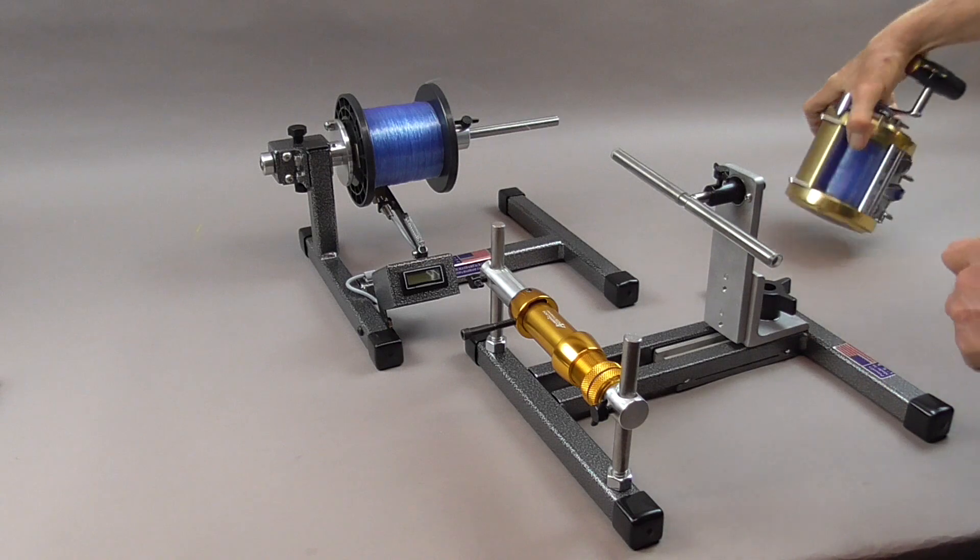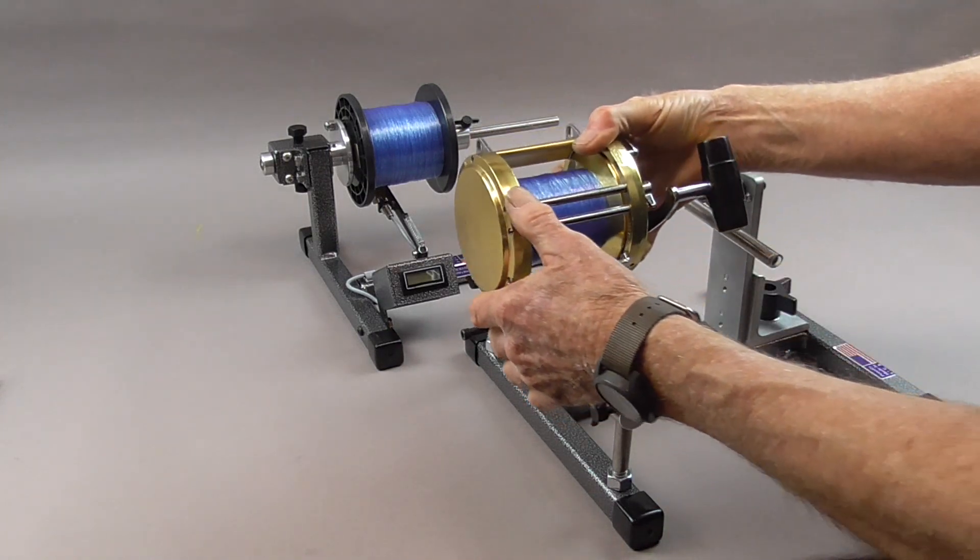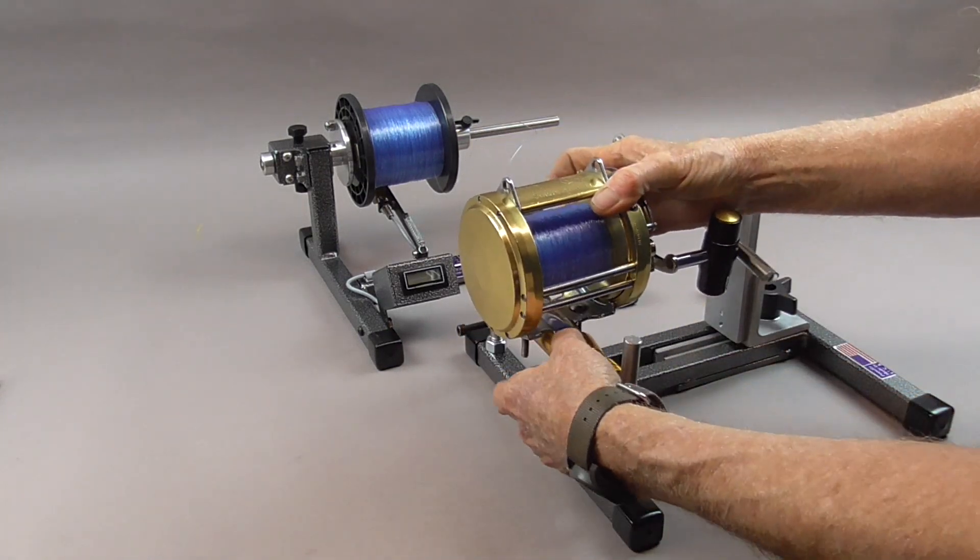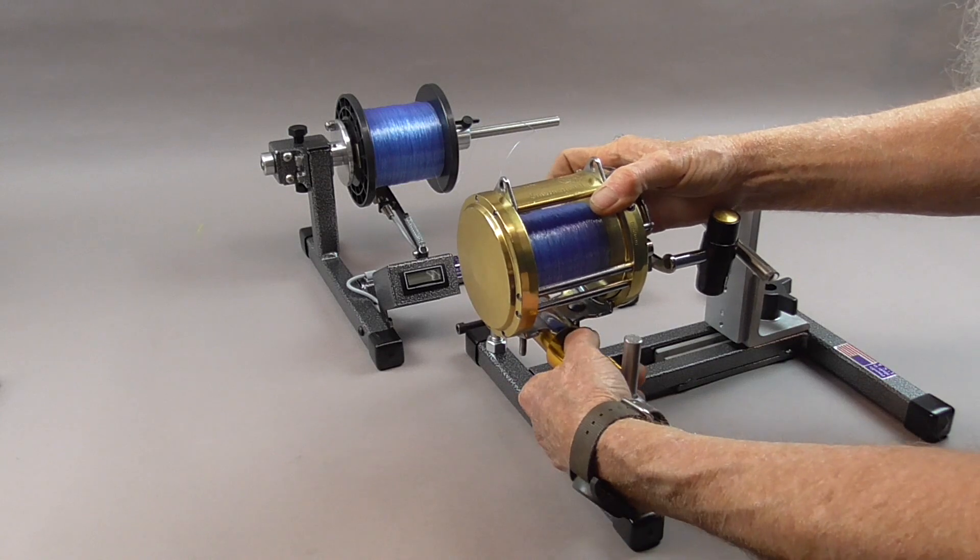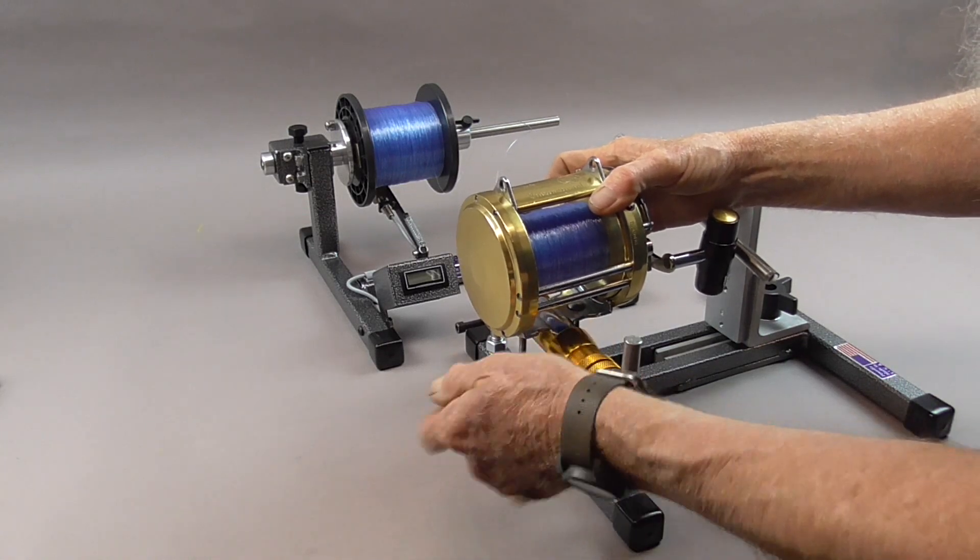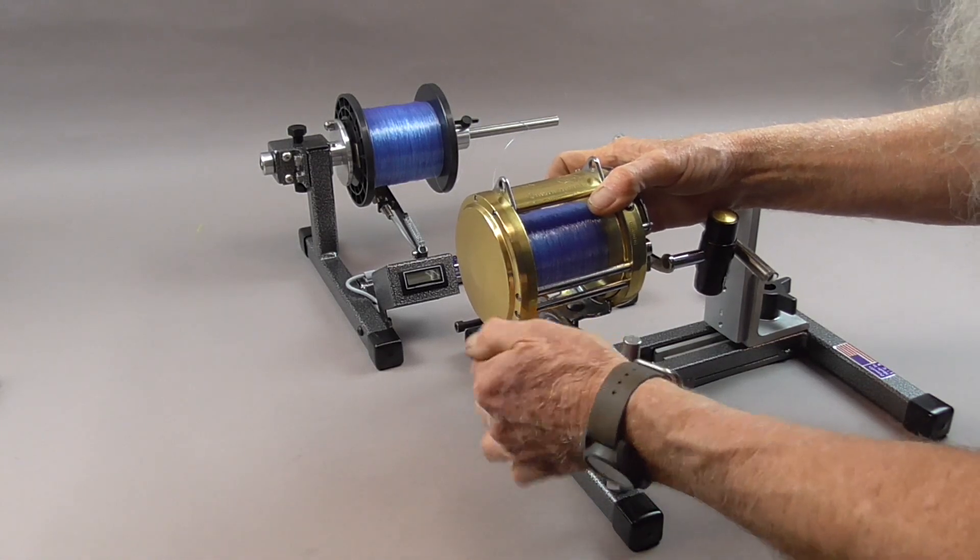Put your reel on the reel seat like you would a fishing rod. Just put it on there. Locate the saddle correctly. Tighten down.